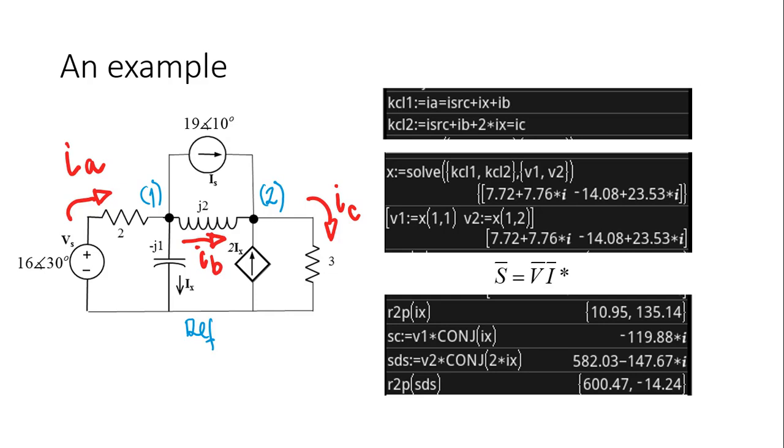That is the current in the capacitor, those are of course RMS amps. Why? Because the two sources were given as RMS phasors. And now the complex power in the capacitor, and that is using Steinmetz formula: the voltage in the capacitor v1 multiplied by the complex conjugate of the current in the capacitor ix. That is the complex power in the capacitor.